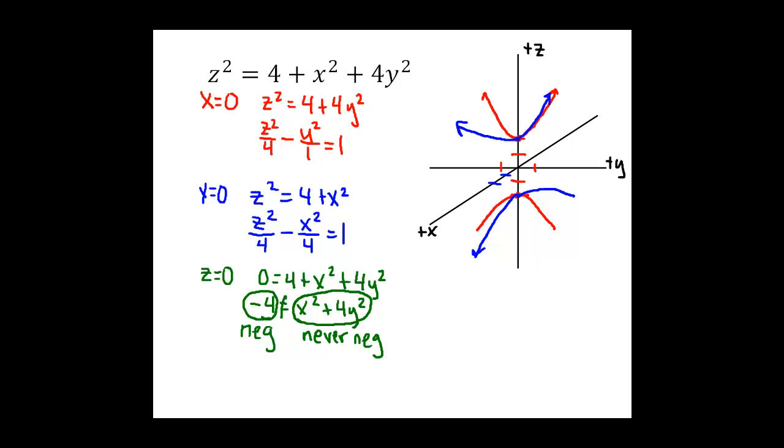Not when I plug in real values of x and y anyway. So this equation is actually false. They can't be equal to each other. A negative number and something that's never negative cannot be equal. So this is a false equation. What that means is that there is no graph of this surface in the xy plane.